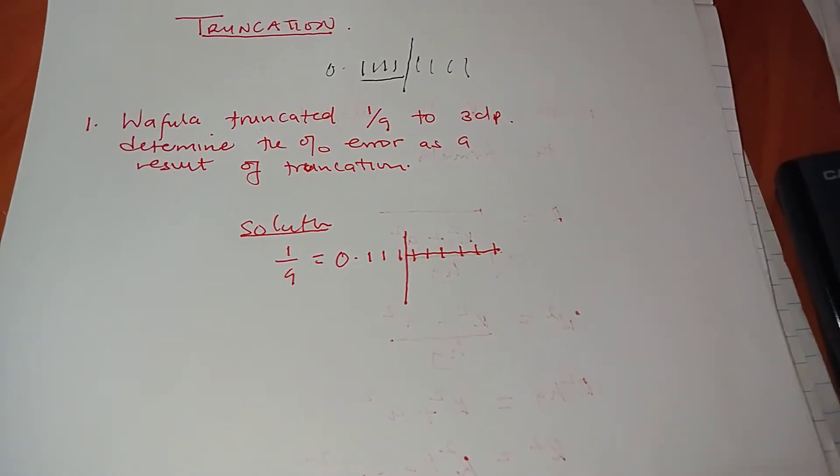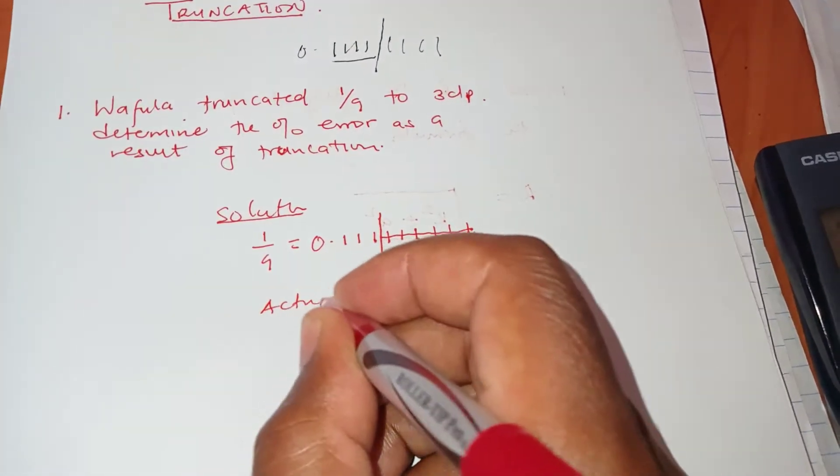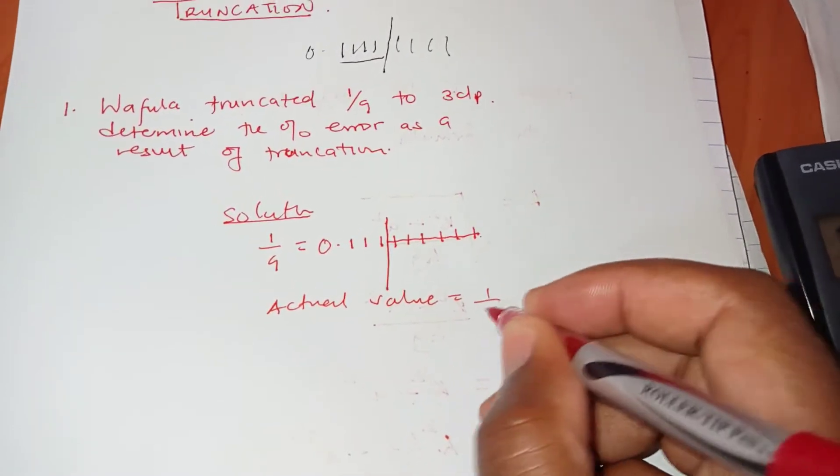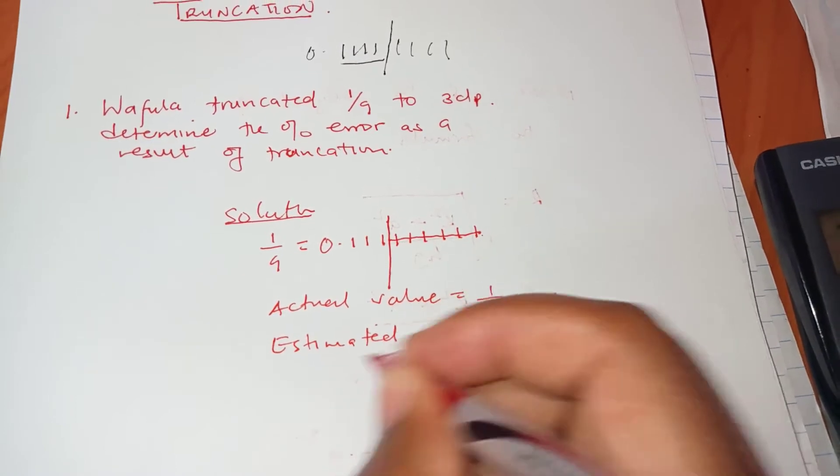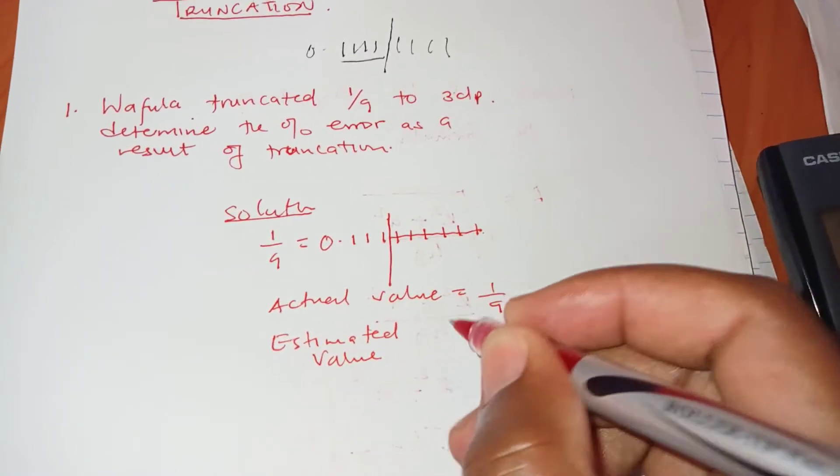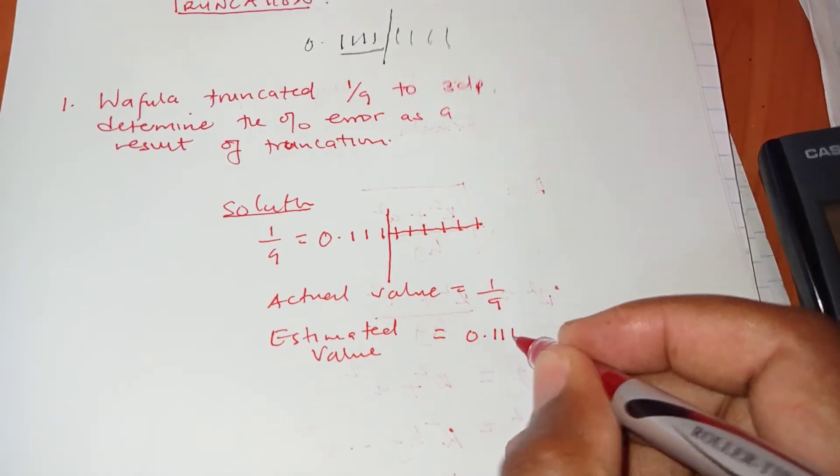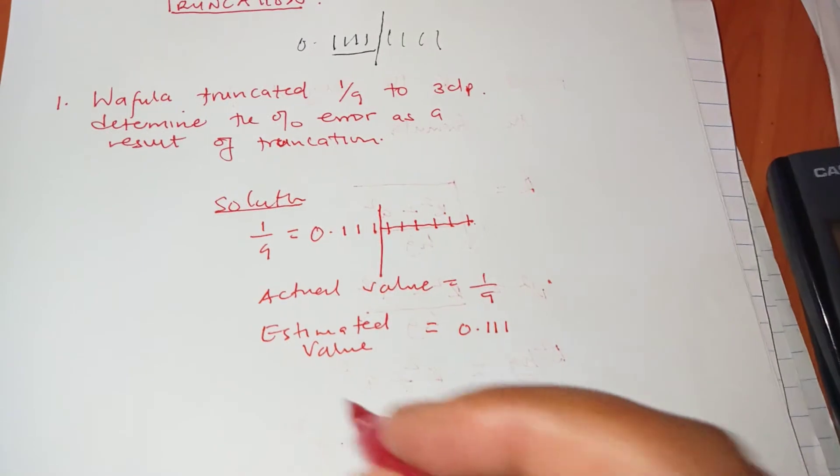I want to tell you that an error is the difference between the actual value and the estimated or the approximated value. So actual value is 1 over 9. The actual value here is 1 over 9 and then the estimated value is equals to 0.111.